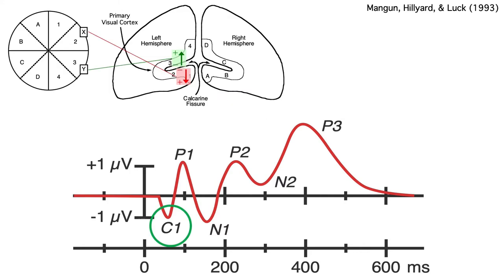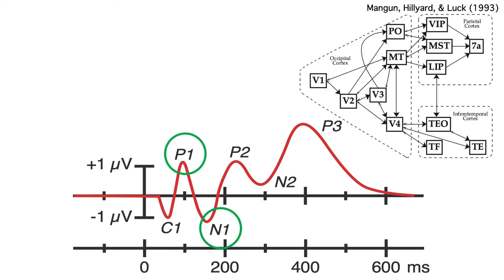We've already talked a little about the C1 wave, which comes from primary visual cortex and can be either positive or negative depending on whether the stimulus is in the lower or upper visual field. When it's positive, it merges together with the P1, so you don't usually see a distinct C1 unless the stimulus is in the upper visual field and the C1 is negative. The P1 and N1 waves reflect the combination of many different brain areas, most of which are in higher level areas of visual cortex.